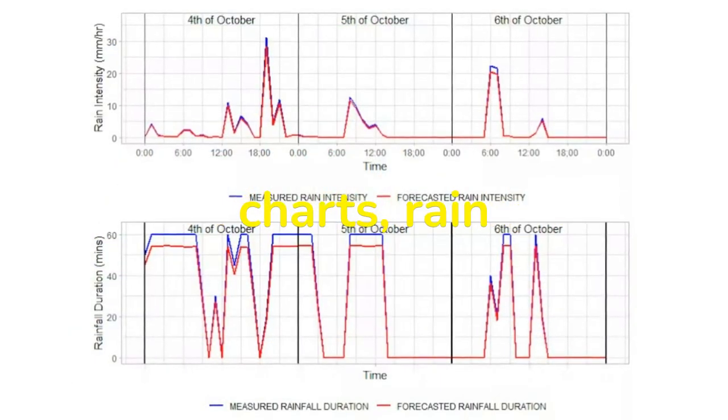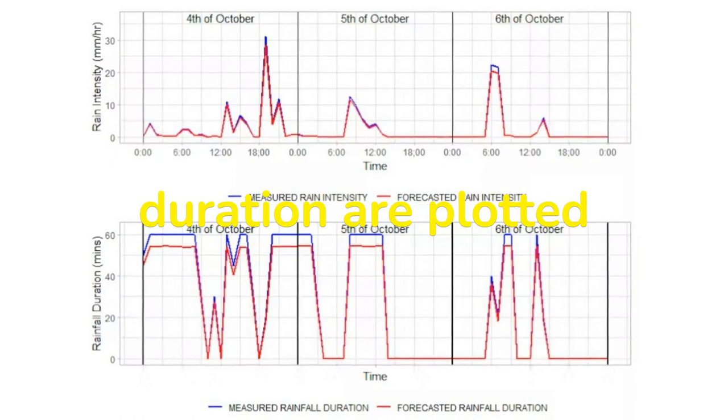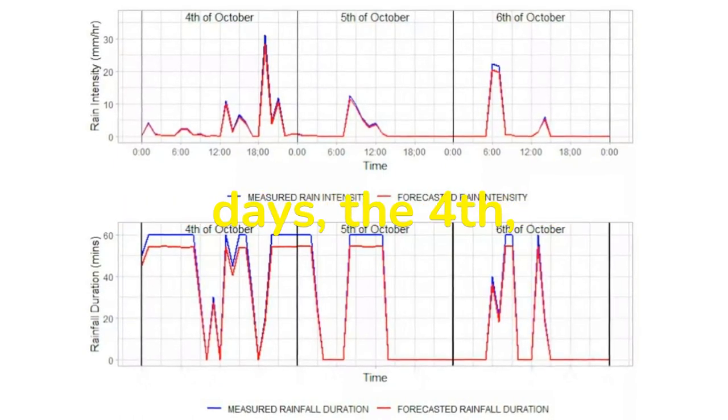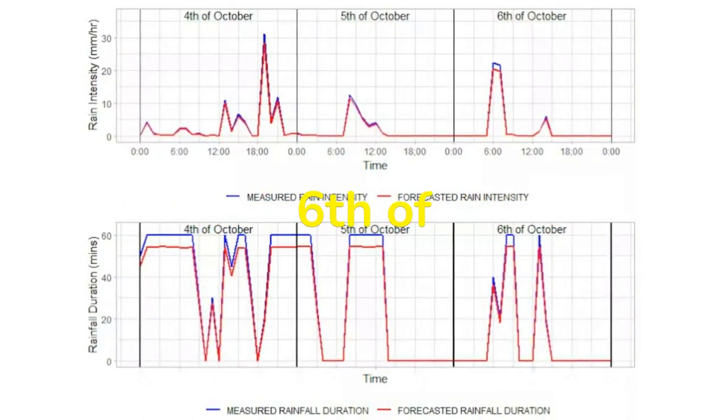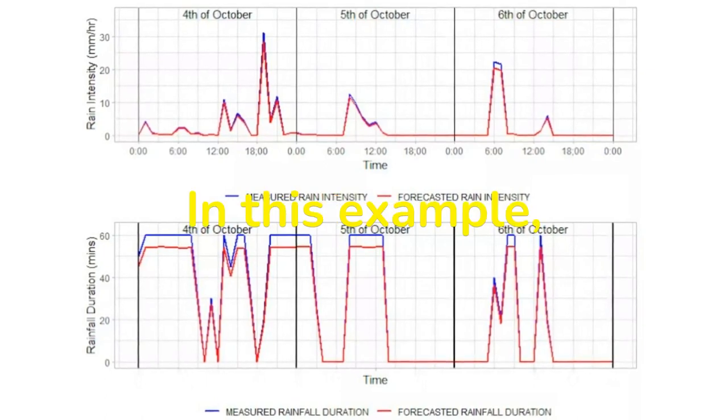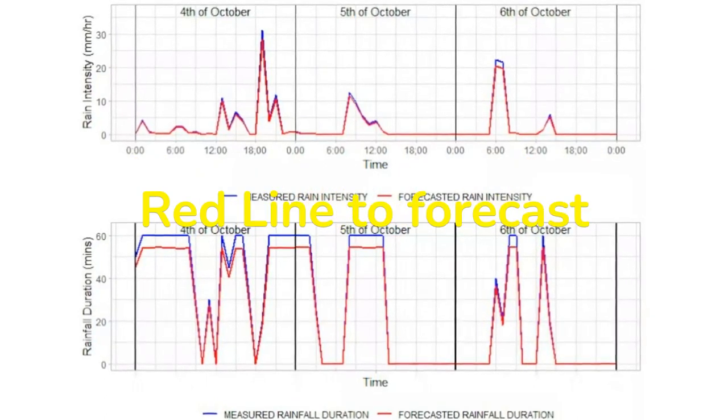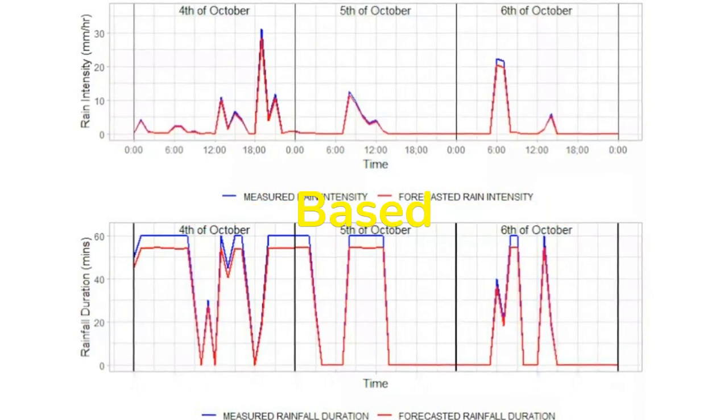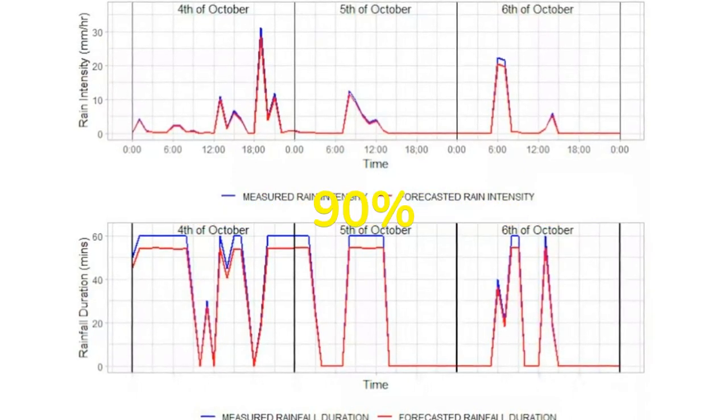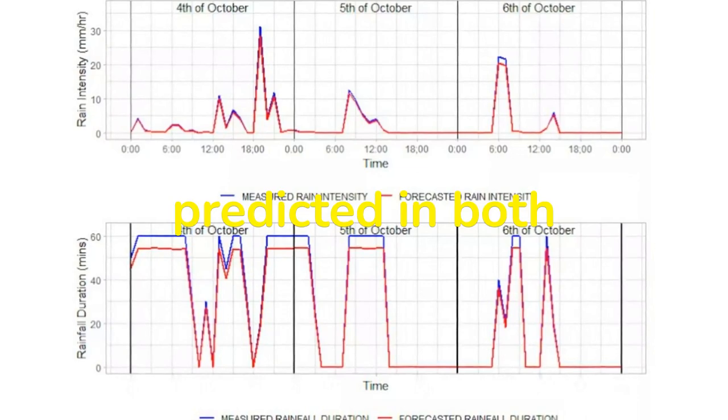In the following charts, rain intensity and rainfall duration are plotted against a time of three days, the 4th, 5th, and 6th of October. In this example, we use the blue line to measure that which is predicted and the red line to forecast what will happen. Based on the line charts, 90% accuracy can be predicted in both cases.